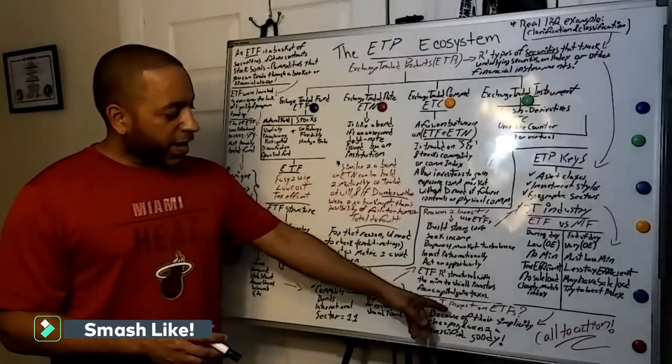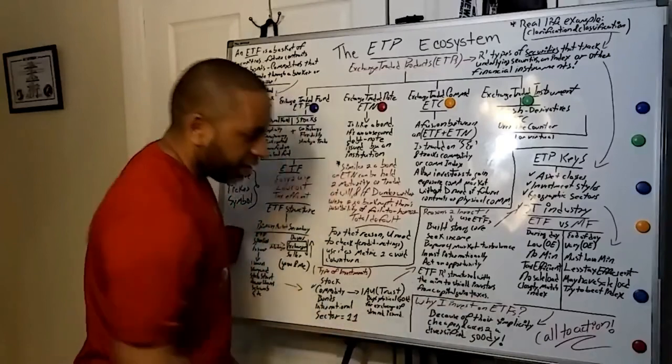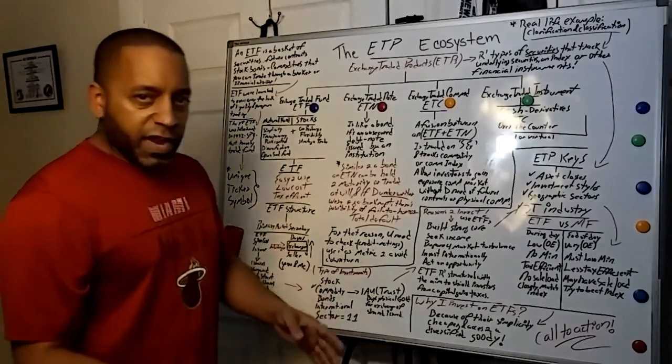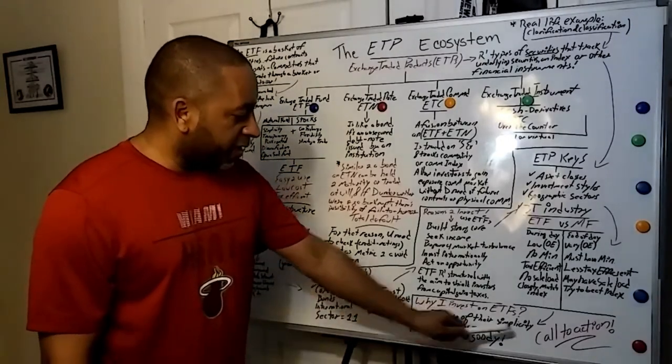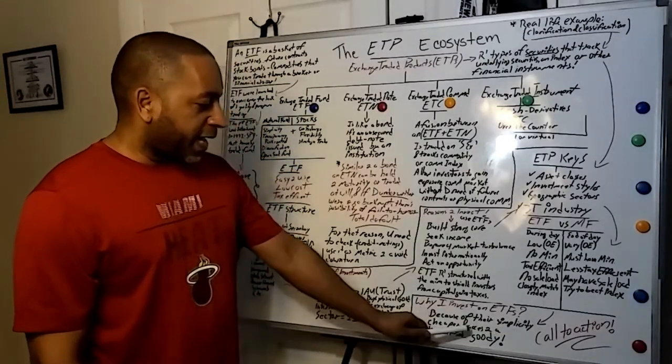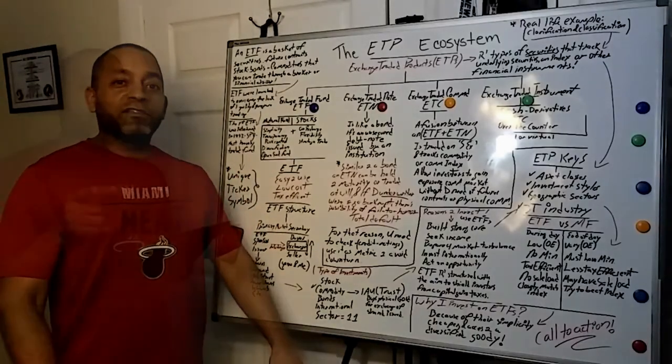The first one, maybe you're looking to use ETFs to build strong core or seek income. Prepare for market turbulence. Key. Invest internationally. Act on opportunity. And this is another key here. ETFs are structured with the aim to shield investors from capital gain taxes. Now, you have to keep in mind, if you go crazy, selling and acquiring one one day, and then selling on the next day, that's going to create implications. So, you have to keep it simple and control yourself.